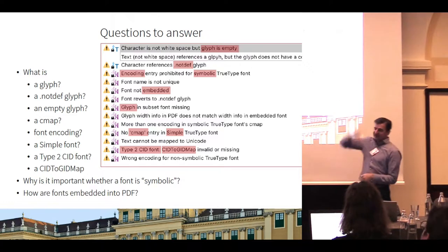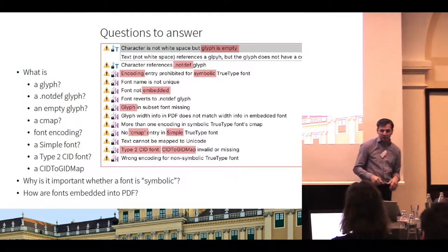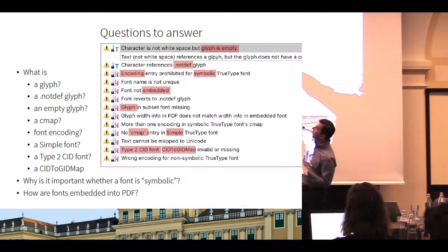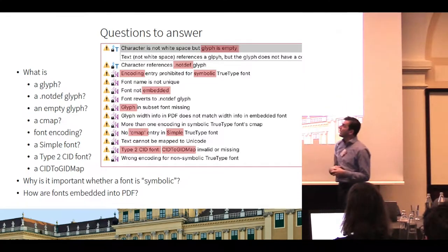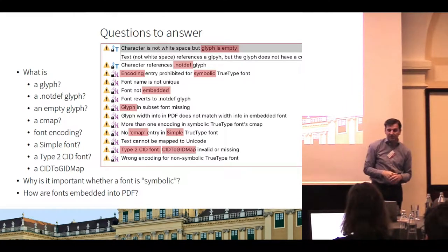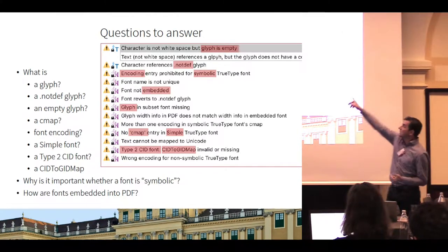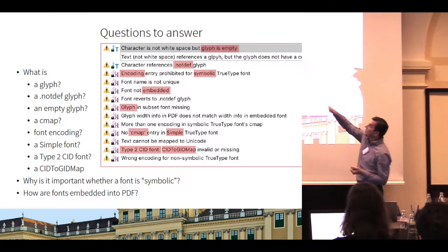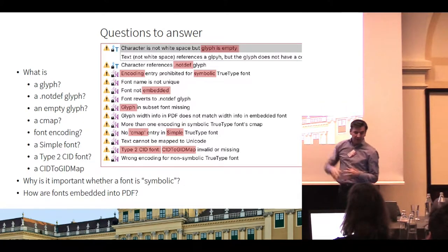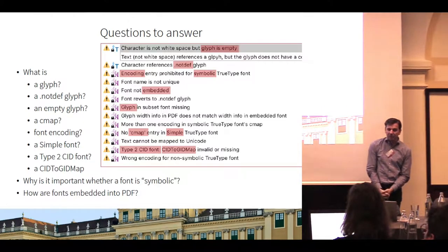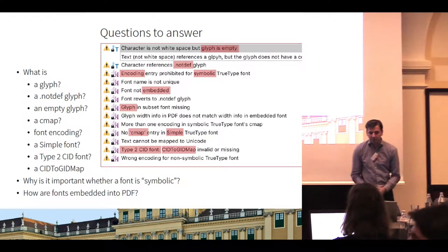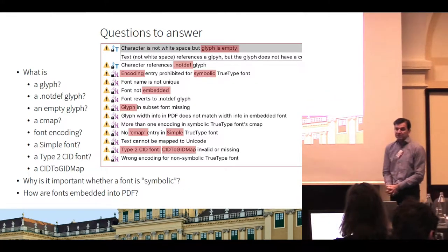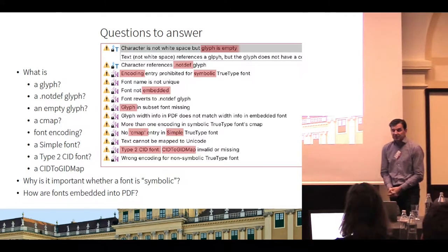I have translated this into questions on the left-hand side: what actually is a glyph, and what actually is an empty glyph? The next check is 'character reference is not that glyph,' so what actually is 'not that glyph'? Then we have 'font name is not unique.' And I also need to cover 'encoding entry prohibited for symbolic TrueType font.'